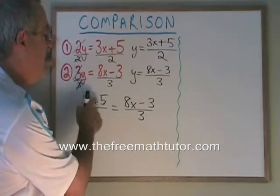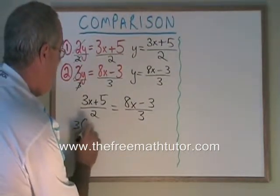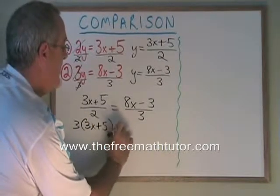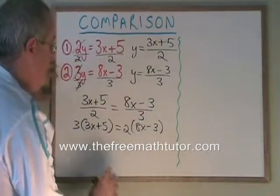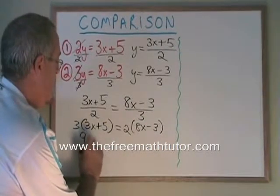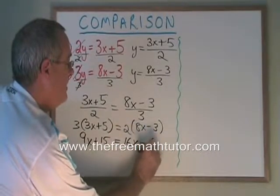Cross multiplying, top times bottom equals bottom times top, I get 3 times 3x plus 5 equals 2 times 8x minus 3. 9x plus 15 equals 16x minus 6.